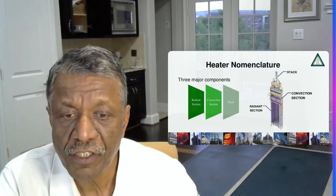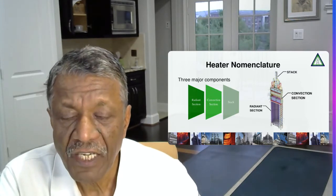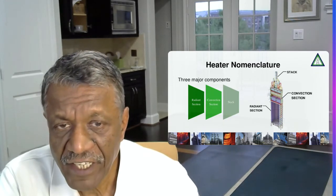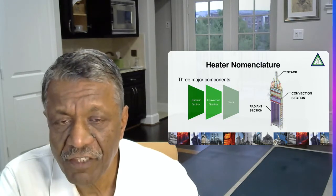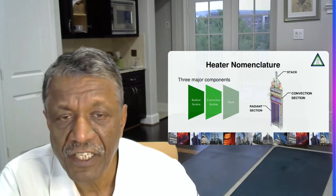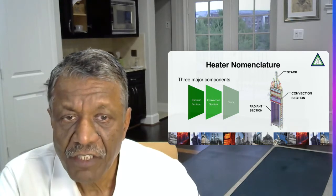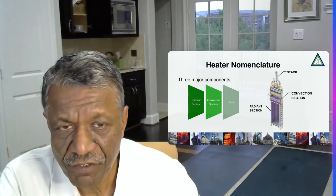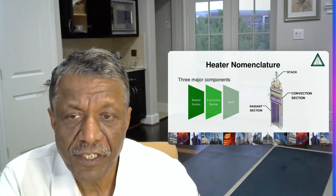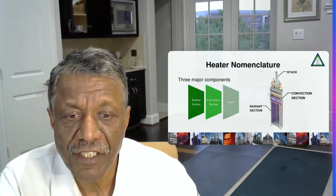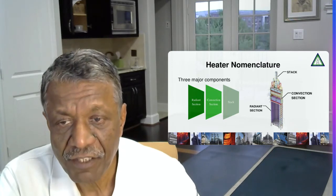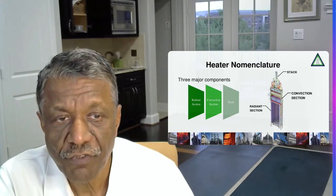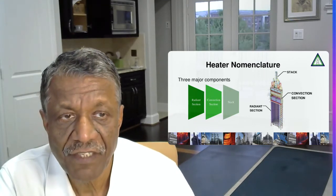So any furnace we are talking about will have three major components. They will have a radiant section where most of the heat, anywhere between 60 to 80 percent of the heat is transferred by radiant section. Then we have convection section where 20 to 40 percent of the heat is transferred in the convection section. And the third component is a stack where the flue gases are disposed safely to the atmosphere. So these are the three major components we are showing over here: a radiant section, convection section and stack.